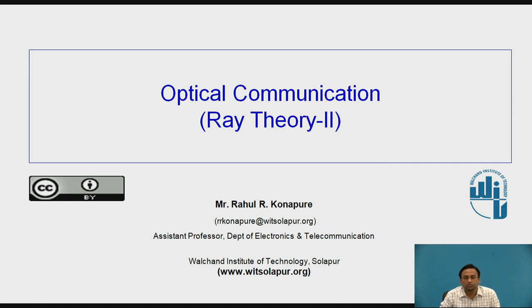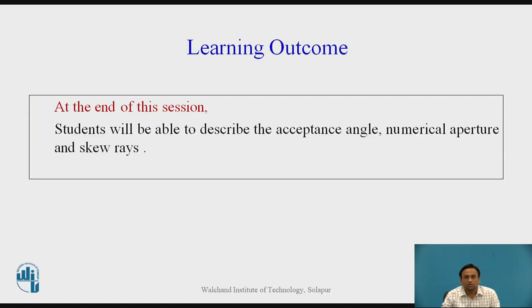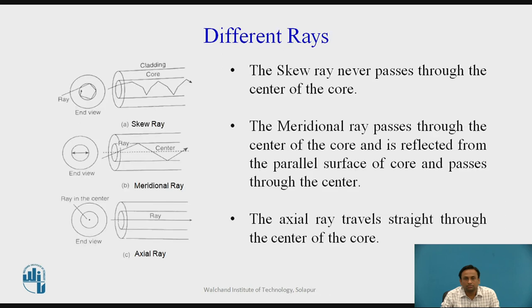Communication ray theory, part 2. In the previous lecture we studied total internal reflection and the critical angle. The learning outcomes for this session are: students will be able to describe the acceptance angle, numerical aperture, and skew rays. Before starting, recall the critical angle and total internal reflection, as those two concepts are required for this session.